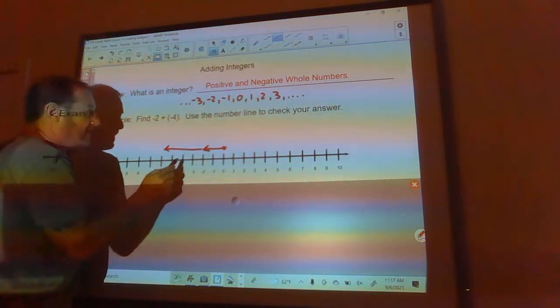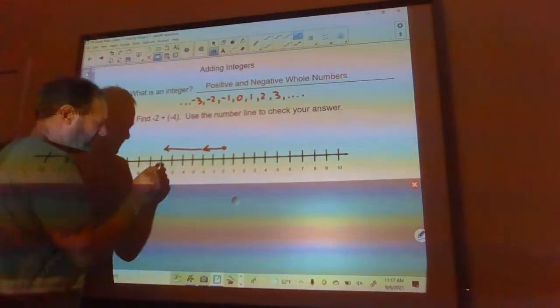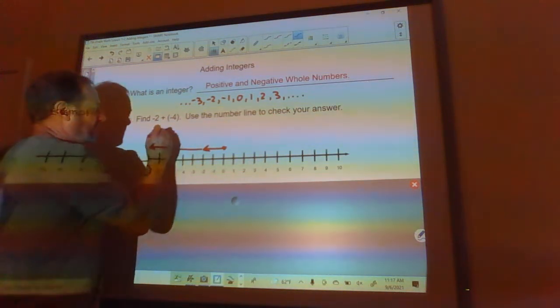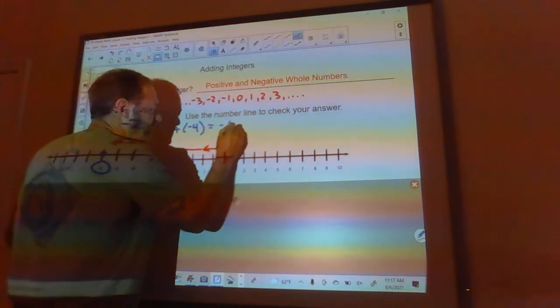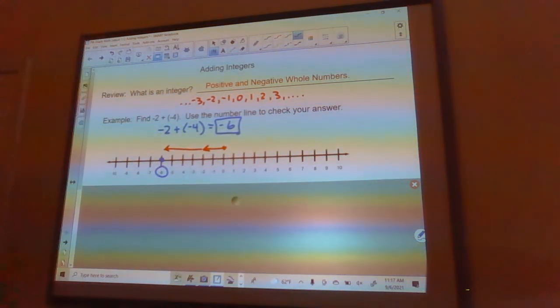Negative is always to the left, so we're going to go 4 from there: 1, 2, 3, 4. And where we end up, we end up right here at negative 6. So the answer to negative 2 plus negative 4 is negative 6. We'll go ahead and put a box around our answer like that.